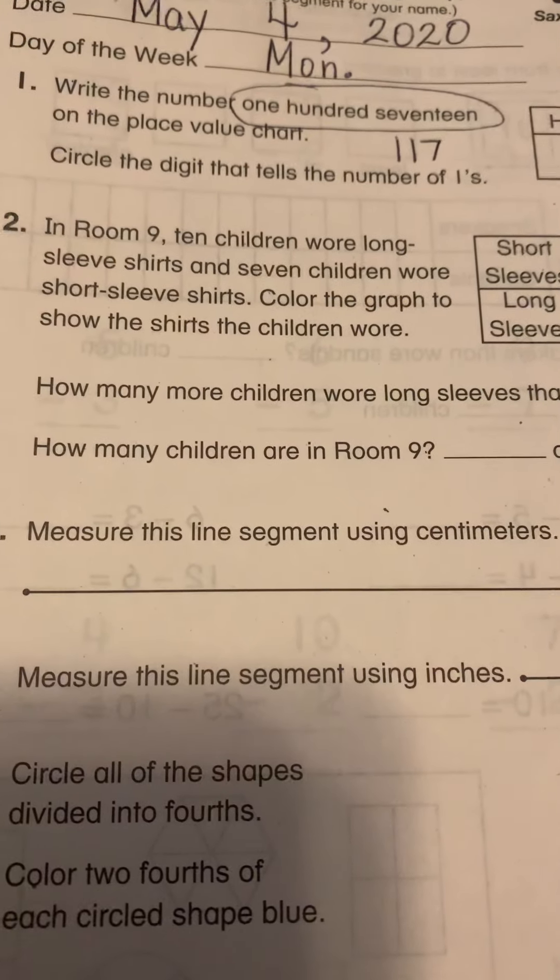And down here, I'm going to be subtracting. Fifty-four cents minus thirty-four cents. Four minus four. If you said eight, you're adding. Don't forget to subtract. Four minus four is zero. Five minus three. If you said eight, you're forgetting you're subtracting. Five take away three. You have 20 cents left.